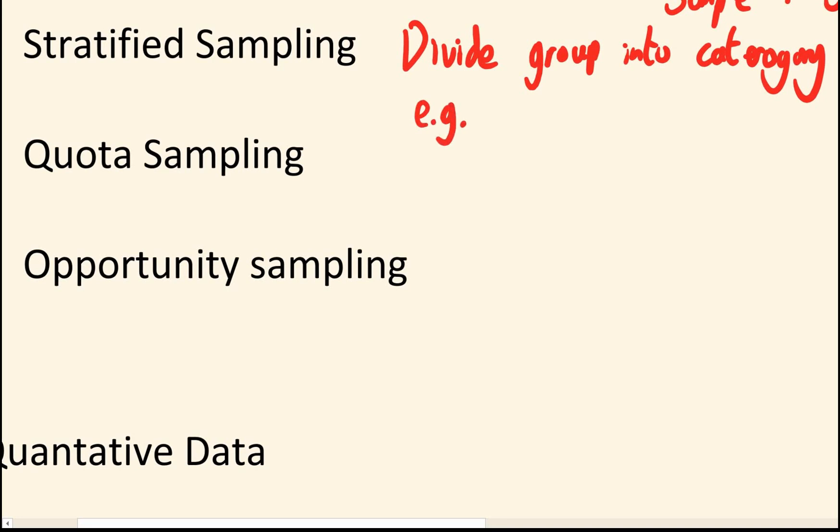So for example, if I had 100 people in year 11, 50 in year 10 and 50 in year 9, you'd have to make sure you get twice as many from year 11. The way the maths works is you work out what fraction of the entire population is year 11, in this case it's half and make sure half your sample size is from year 11.